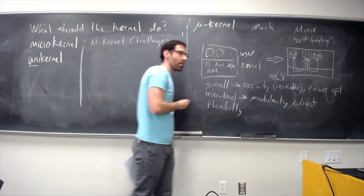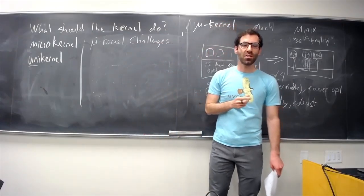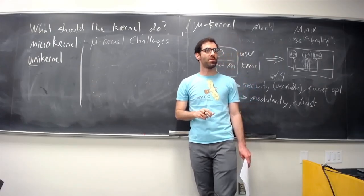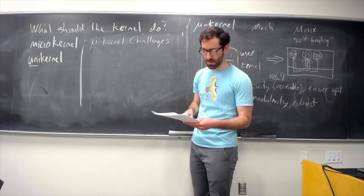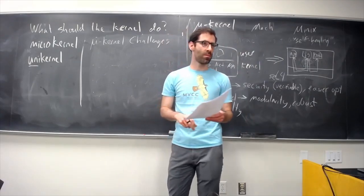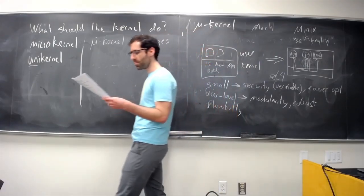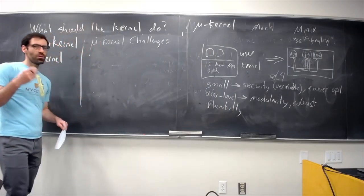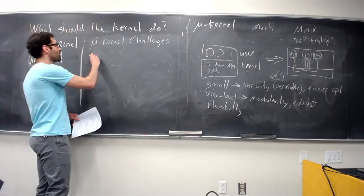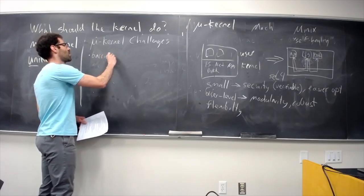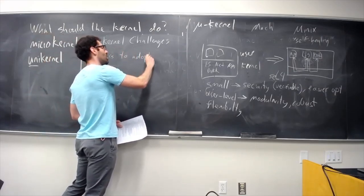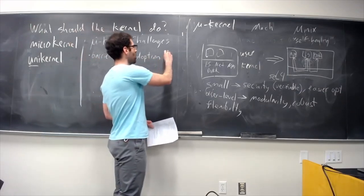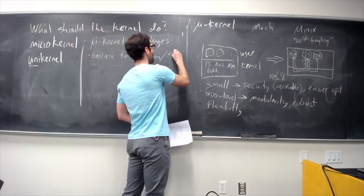So this is the general idea of a microkernel — those are our aspirations. Take a few minutes and brainstorm with your neighbors: what would be some challenges to actually making this work? To actually implementing or achieving these goals in a real microkernel? Going from the monolithic kernel world we know to something like this — what problems or challenges might we have to solve?